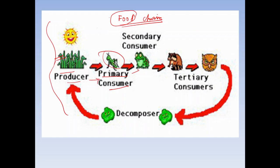Insects like grasshoppers are an example of primary consumers. The living organisms which feed on the primary consumer are called the secondary consumer. In this way, transfer of food is occurring from the primary consumer to the secondary consumer.